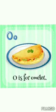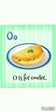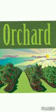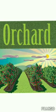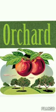O is for omelette. An omelette is a dish of beaten eggs. It is cooked in a frying pan and you can serve it plain or fold it in half with some filling inside. I love my omelette with cheese and mushroom filling. O is for orchard. An orchard is an area of land where fruit trees are grown. This is an apple orchard, and this is an orange orchard.